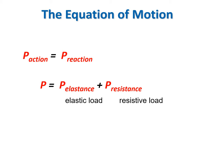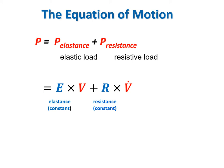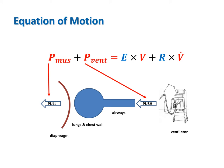We can expand the right-hand side of the equation to show that the reaction of the respiratory system has two components: the elastic load and the resistive load. The elastic load is the pressure equal to elastance times volume, or volume divided by compliance. The resistive load is the pressure equal to resistance times flow. Pressure, volume, and flow are continuous functions of time; elastance and resistance are constants. If the patient is breathing along with the ventilator, both combine to generate the required pressure. The pressure generated by the patient's ventilatory muscles is called PMUS; the pressure generated by the ventilator is called PVENT.